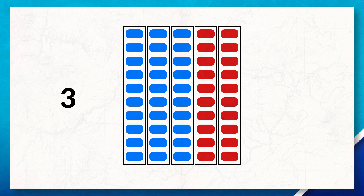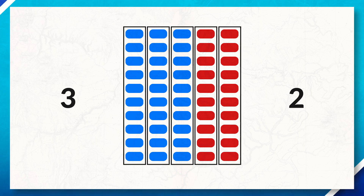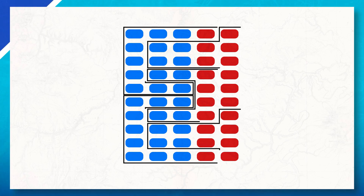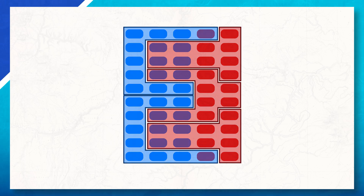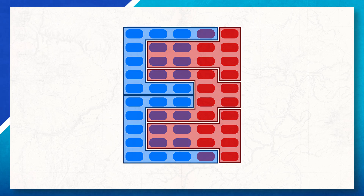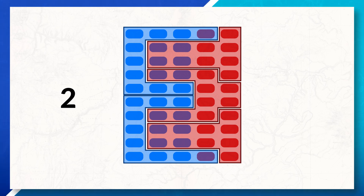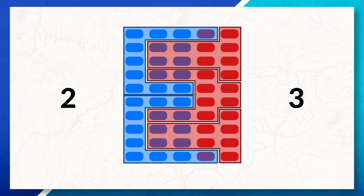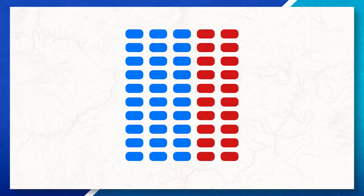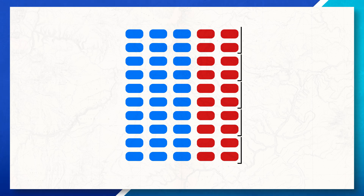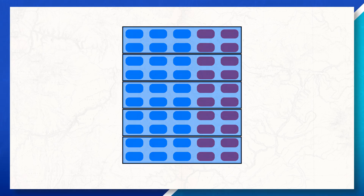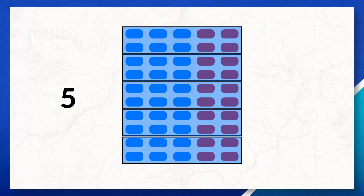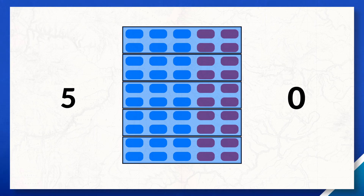Notice that three of the districts would go to the blue party and two of the districts would go to the red party. But let's say the red party redistricts and gerrymanders them. Notice that now, even though the blue party still has 60% of the votes, they will now only win two districts, while the red party will end up winning three districts, even though they only got 40% of the vote. Or let's say that the blue party was in control of redistricting and they decided to gerrymander these districts. Here you can see that the blue party is still only getting 60% of the votes, but now they will win all five districts, while the red party, still with 40% of the vote, will end up winning none of the districts.